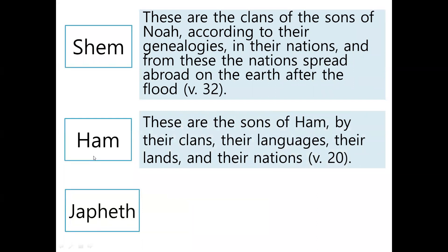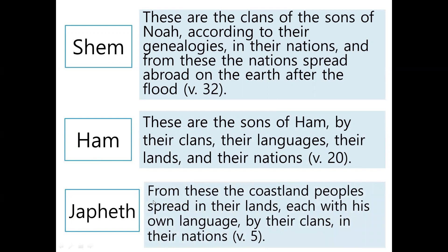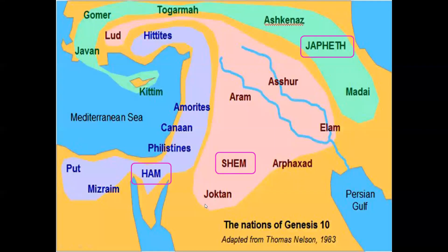And after Ham's sons' names, the last verse about their family says: 'These are the sons of Ham by their clans, their languages, their lands, and their nation.' Japheth also had a similar verse: 'From this, the coastal peoples spread in their lands, each with his own language, by their clan, in their nations.' So Shem, Ham, and Japheth all scattered like this.